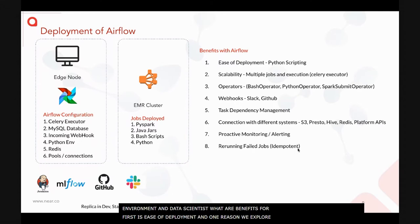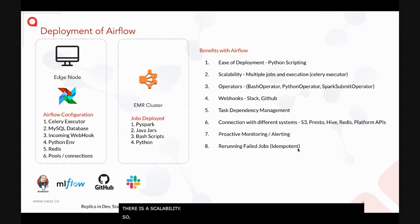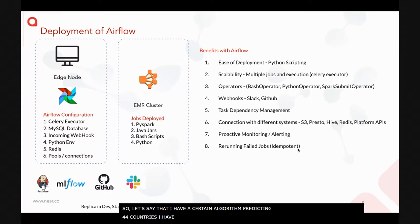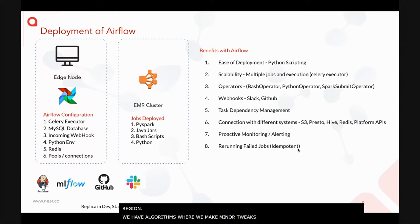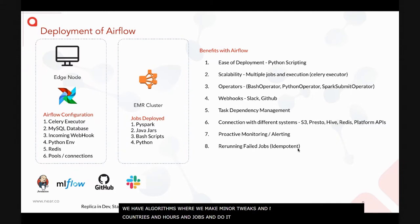Scalability is another major benefit. For example, if I have a gender-prediction algorithm, I can't run one job for 44 countries — I need 44 separate jobs, each specific to a country or region. With Airflow, we make minor tweaks and scale them across countries, time windows, and jobs very easily. We also do a lot of parallelization given the volume of data we crunch.